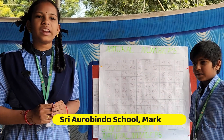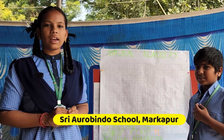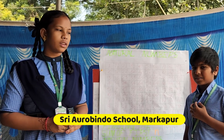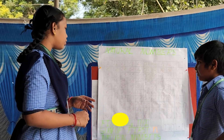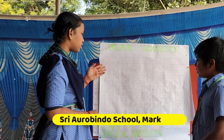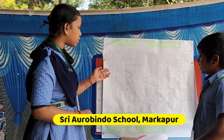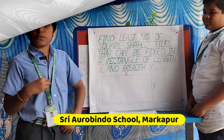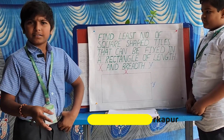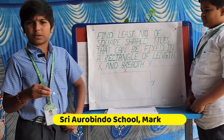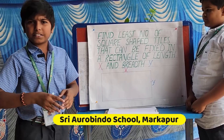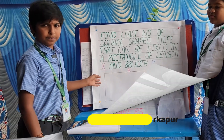Good morning to all. My name is Tershvini. I am from 6th class. I have a question for you: can you find the sum of the first three odd natural numbers? How do you find the least number of square shapes of the same size that fit in a right angle?